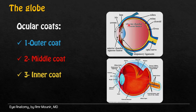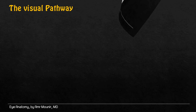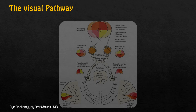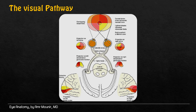The inner coat is formed of the retina and the optic nerve. The visual pathway includes the optic nerve, optic asthma, optic tract, lateral geniculate body, optic radiations, and lastly the occipital cortex.